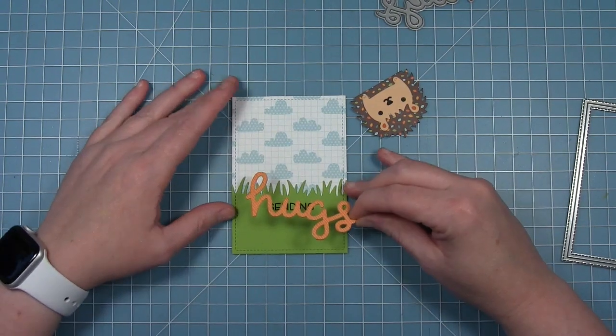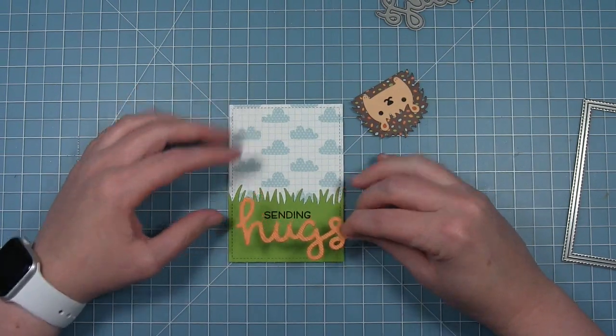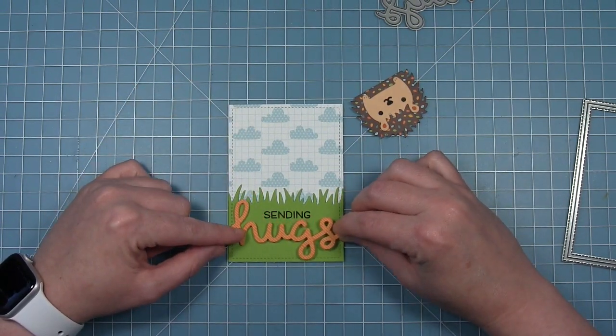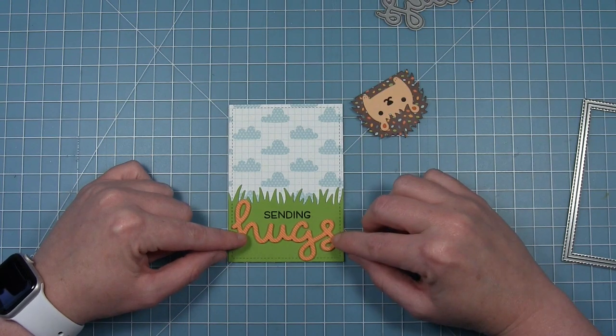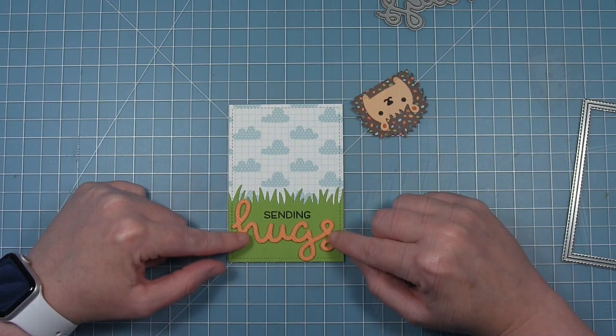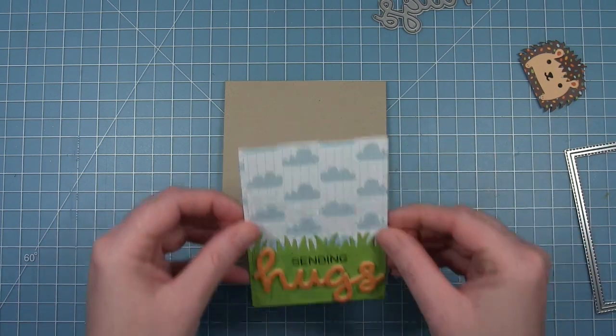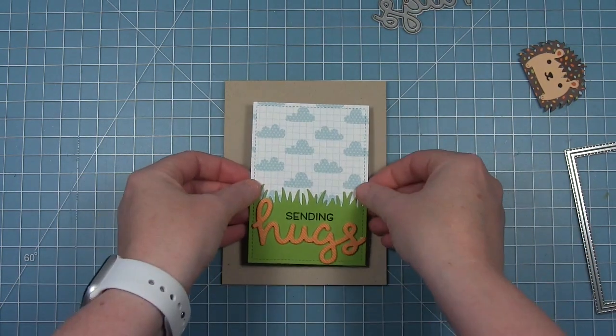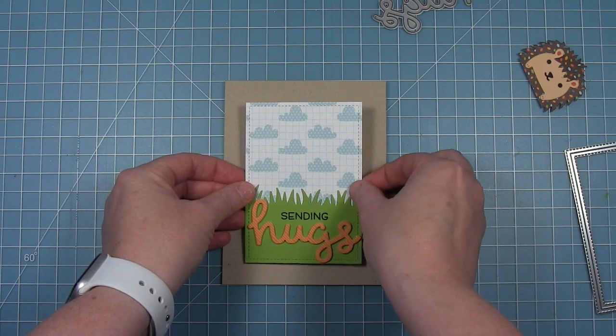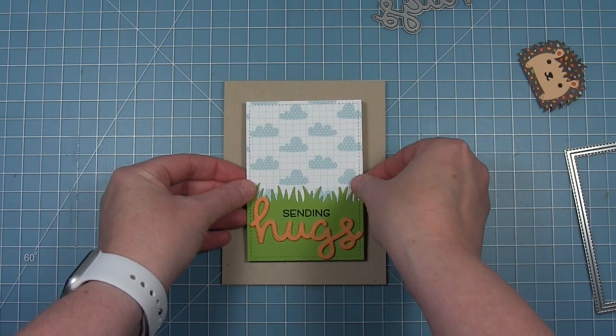Now I'm going to go ahead and add that stacked up scripty hugs that I created earlier. I'm just putting it right below the sending that I stamped. It's just going to kind of hug that sentiment there. And then the whole panel I've put on some foam tape. I'm just going to center it up and pop it up off a craft cardstock base.